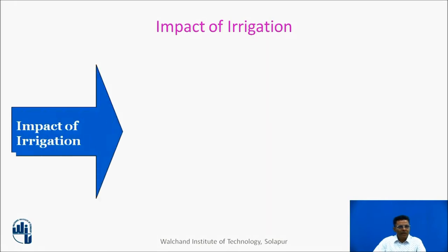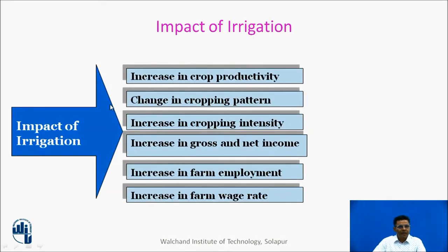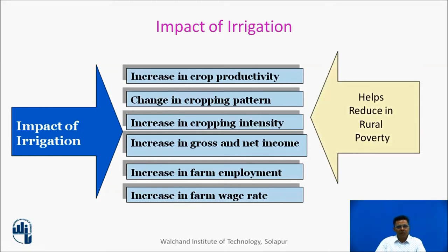The impacts of irrigation: irrigation increases crop productivity due to assured water supply. After providing irrigation, one can take cash crops and crops even in summer seasons — that is why irrigation facilities change the cropping pattern, hence increasing cropping intensity. It increases gross and net income of farmers, increases farm wage rates, and ultimately helps to reduce rural poverty and leads to prosperity.